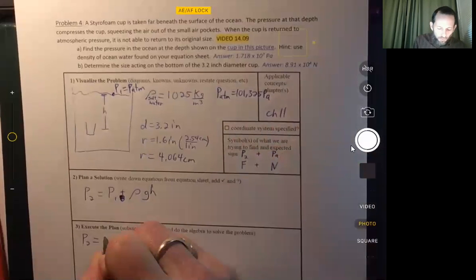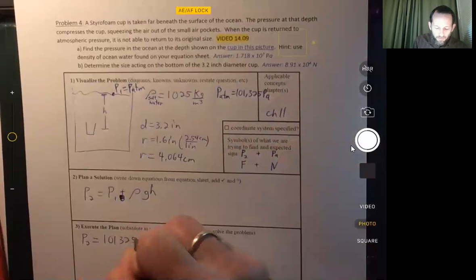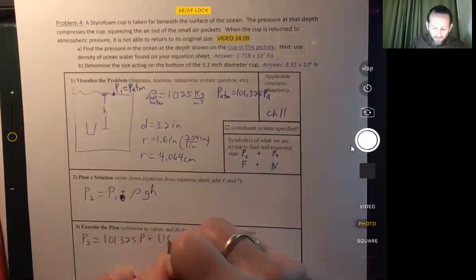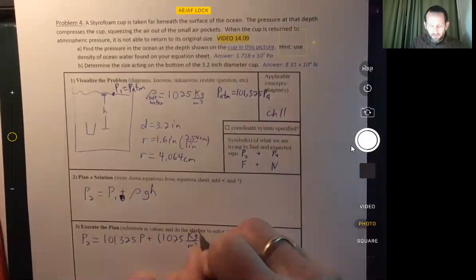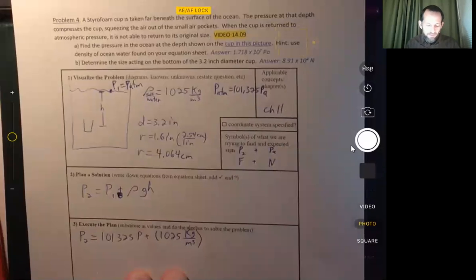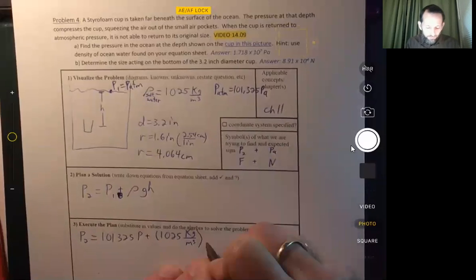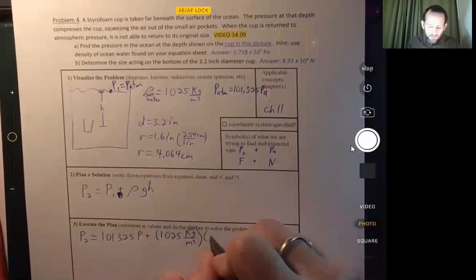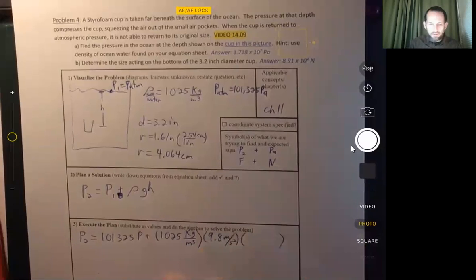All right. So atmospheric pressure, 101,325 pascals plus the density of seawater. And that's going to vary from place to place. Not all seawater has the same density, but that's the value we're going to use for seawater, unless it's specified differently in a problem.